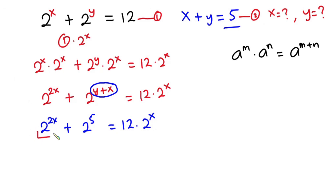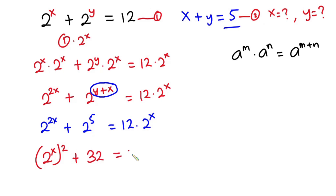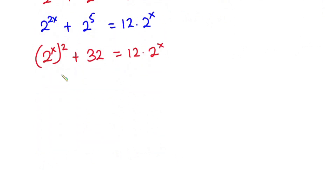Now simplifying this, I can write 2 to the power 2x as 2 to the power x, all to the power 2. Then 2 to the power 5 is nothing but 32, and this is equal to 12 times 2 to the power x. Now from here let's go ahead and set 2 to the power x to be equal to m.